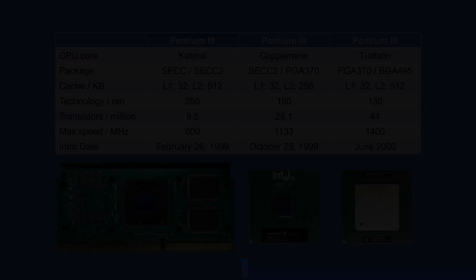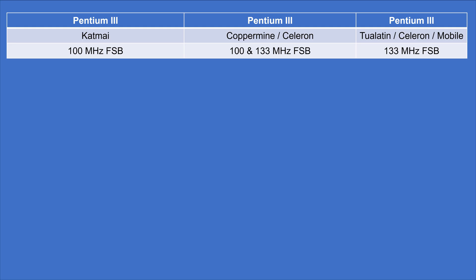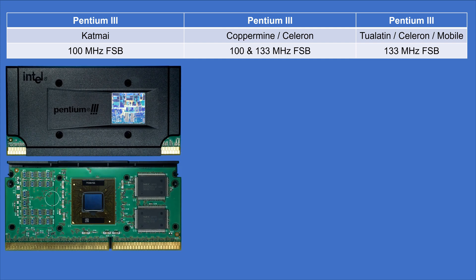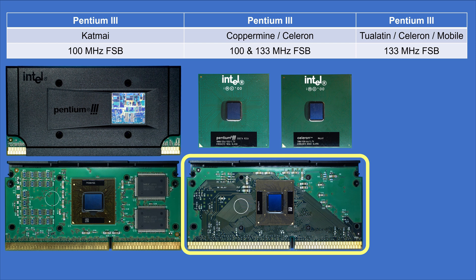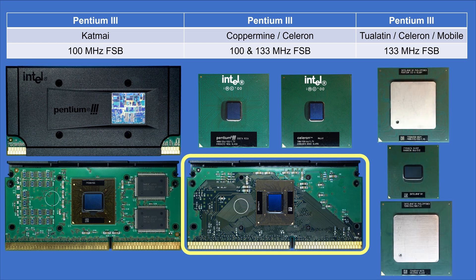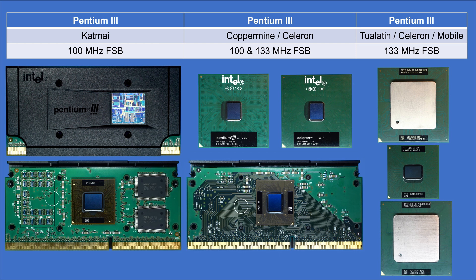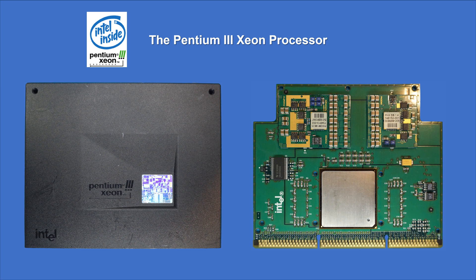The Katmai core had a front side bus of 100 MHz, which could be increased with the Coppermine core but only with PGA370 systems. Coppermine SECC versions also existed. Coppermine and Tualatin cores were also available as low-end processors called Celeron, which usually had only half the second level cache. Next to mobile versions, the high-performance platform Xeon was further developed, with those processors able to have up to 2 MB second level cache.